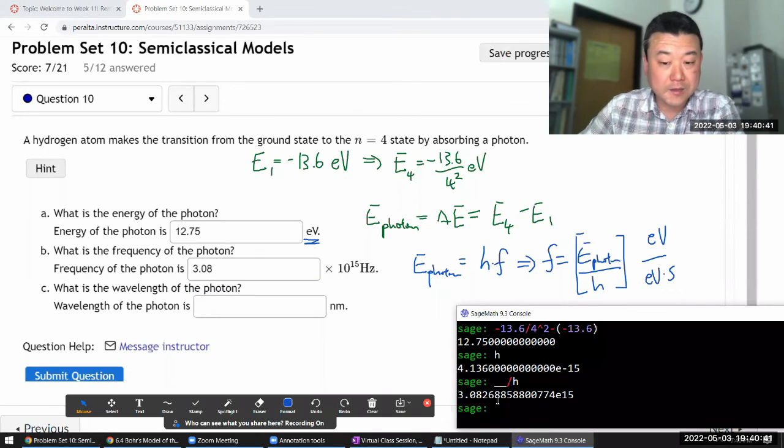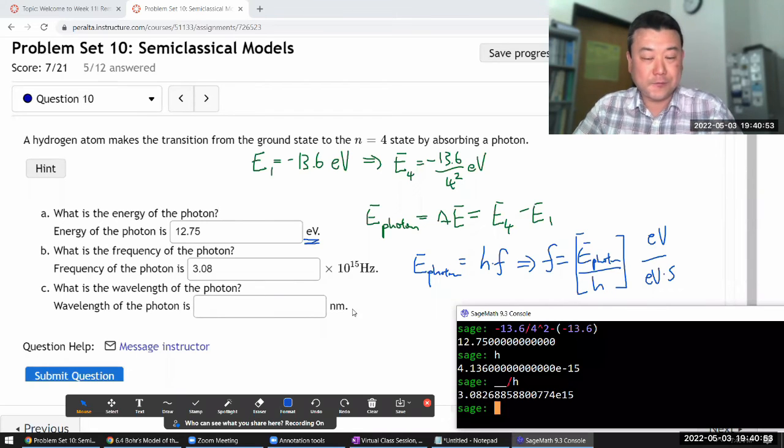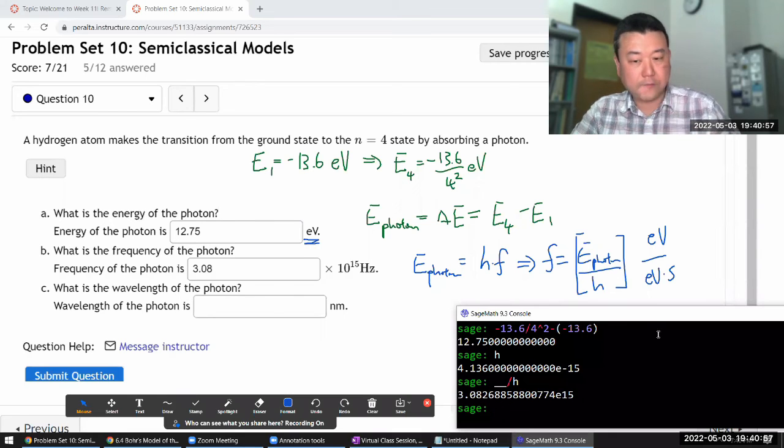Pretty high, high enough that there are electronic devices that will fully resolve that, it's a visible photon. It's above visible. I think this is ultraviolet. Okay. What is the wavelength of the photon? That will settle it. So we have the frequency of the photon.